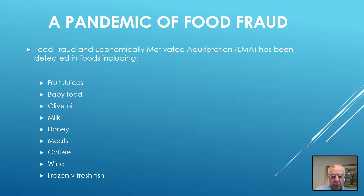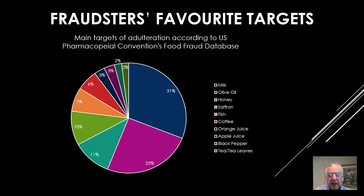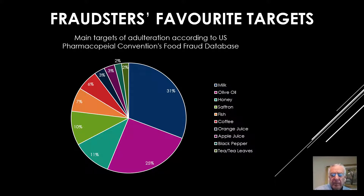honey, meats, coffee, wines, frozen versus fresh fish, and the list goes on. The USP's food fraud list is shown in this slide, which describes the most prevalent foods that have been subject to adulteration.